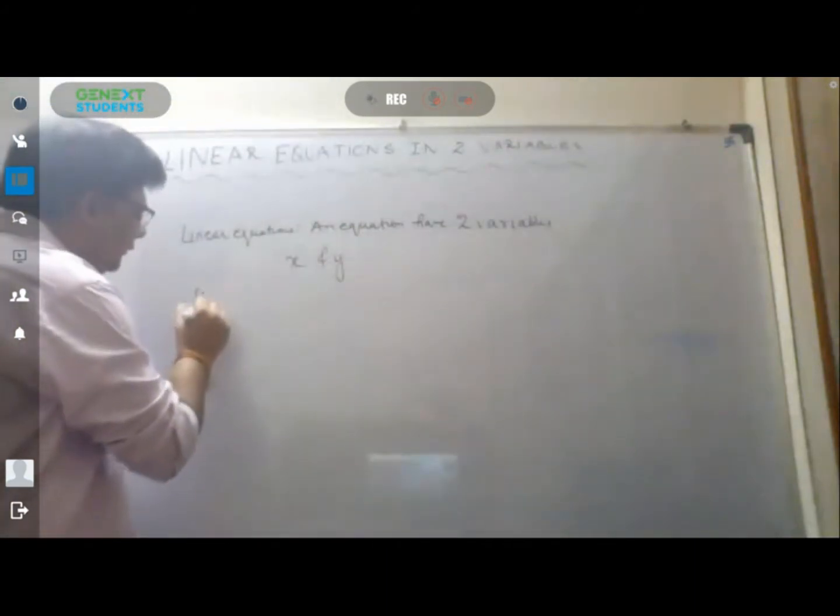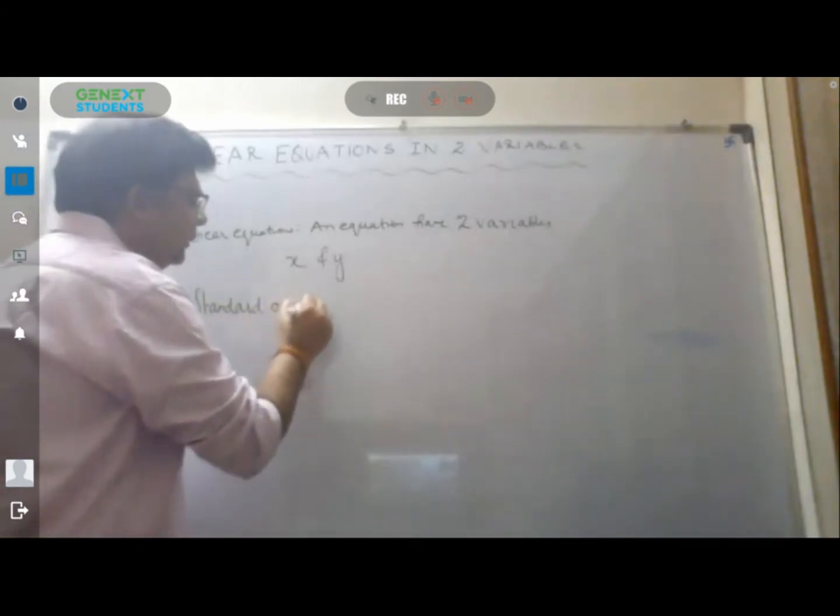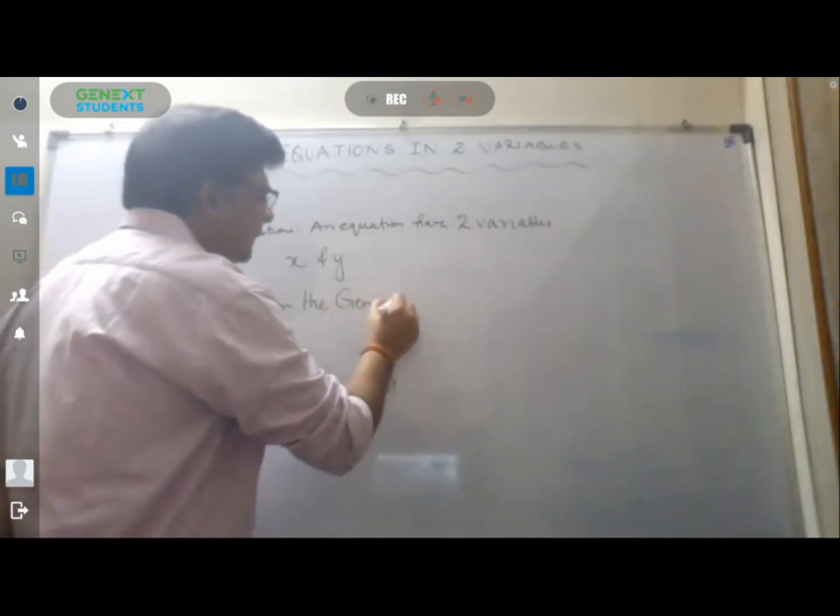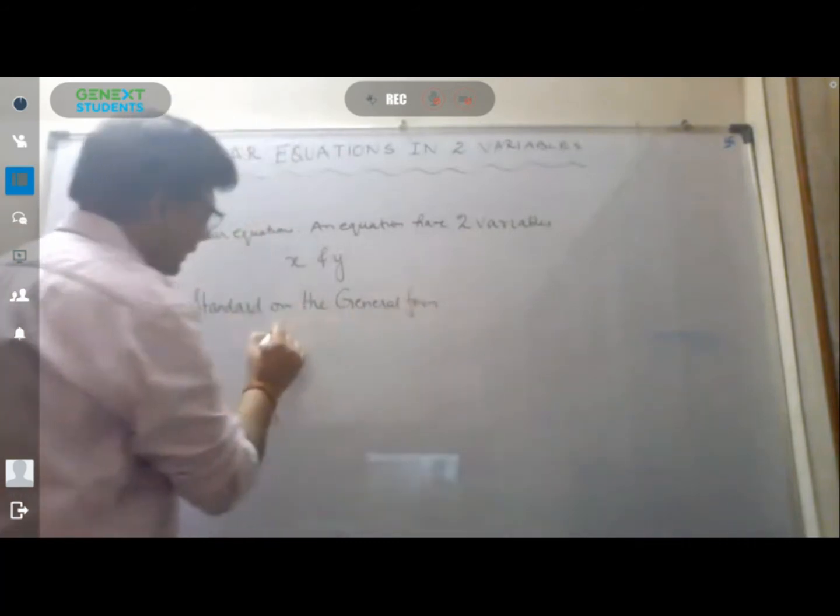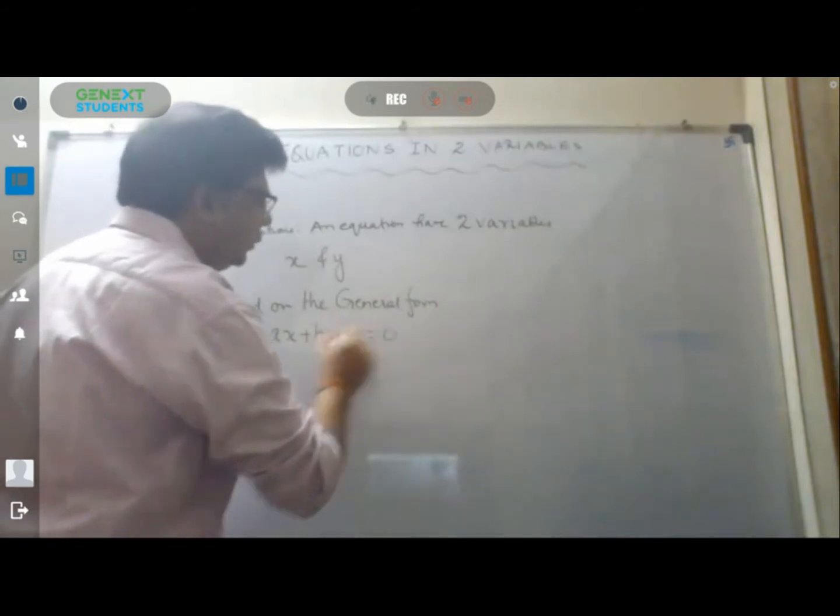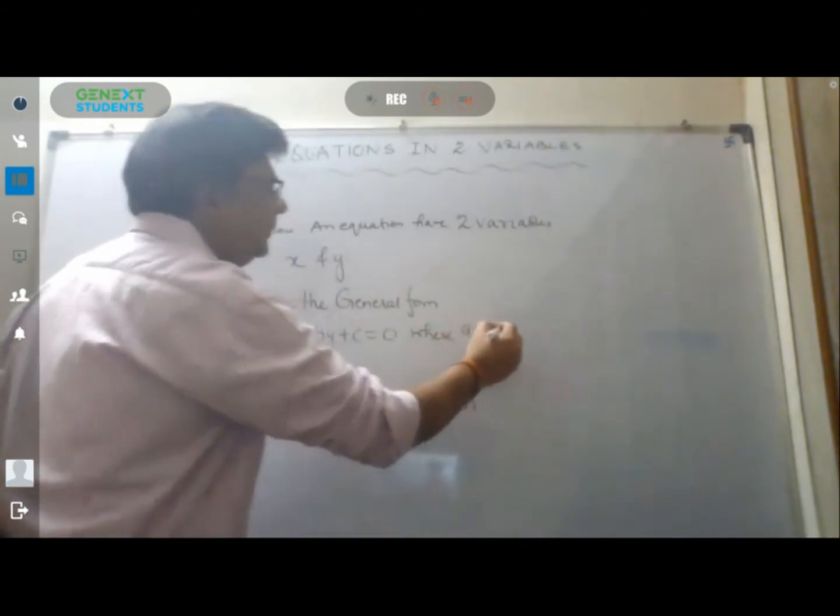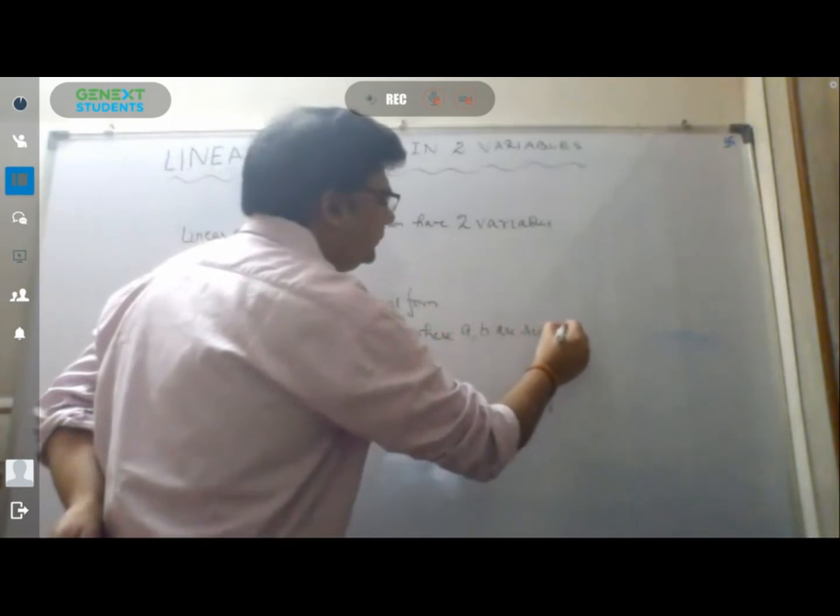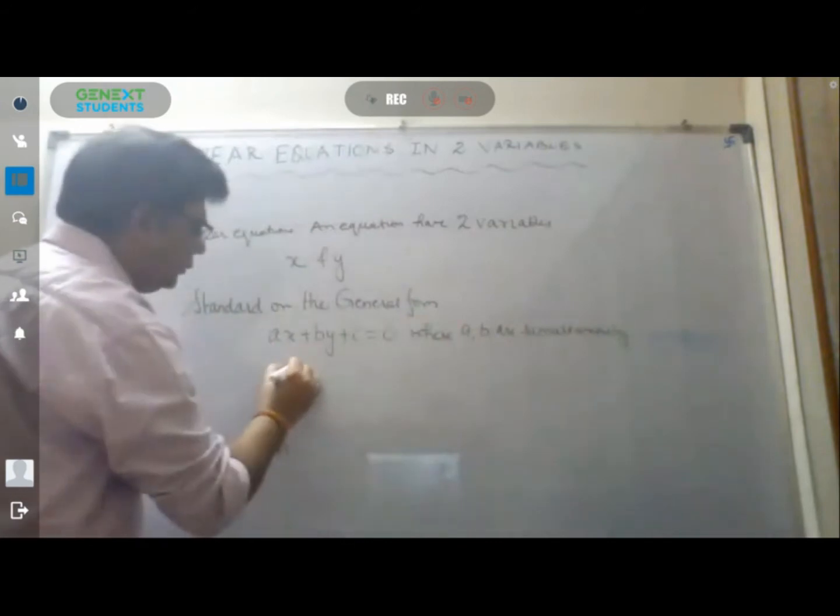The standard form or general form of the equation is ax plus by plus c equal to 0, where a and b are simultaneously not equal to 0.